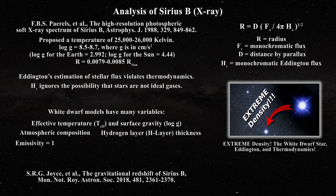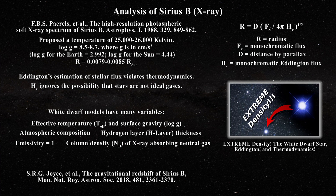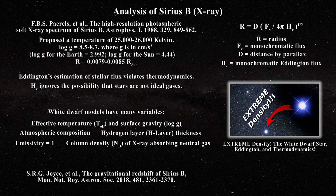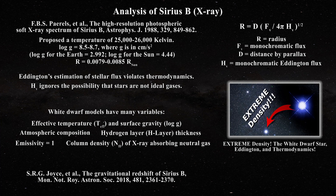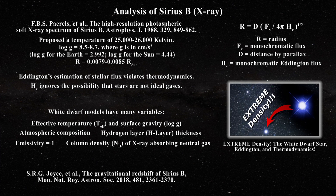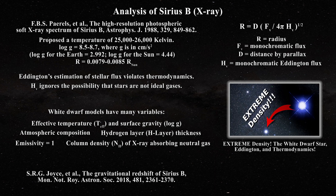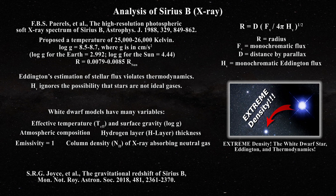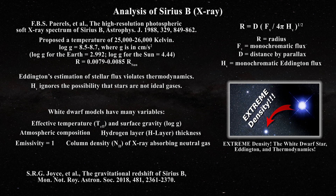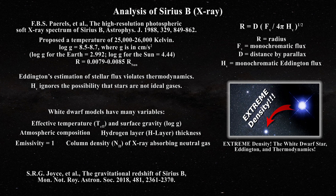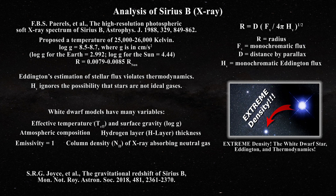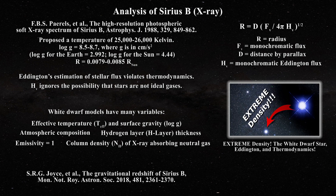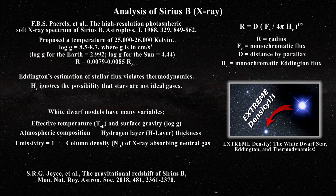Even worse, Perel et al. claim to have an extra parameter: the column density N_H of x-ray absorbing neutral gas between the star and the Earth. Yet they have no way of measuring that column density, which allows them to essentially mimic a lower emissivity for the star. Between the flux, the radius, hydrogen layer thickness, the composition, and the claim to account for all gas between the star and the Earth, astronomers have invented non-falsifiable models where almost none of the variables can be measured or categorically proven to be wrong. Yet non-falsifiable science isn't science at all — it's just a belief system.